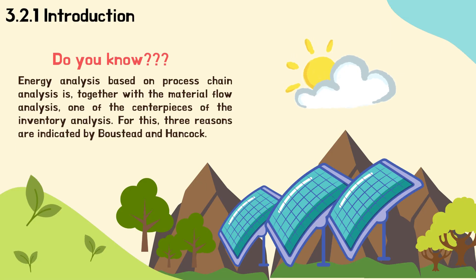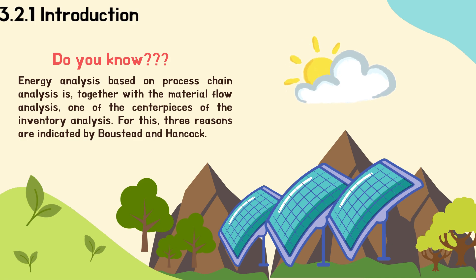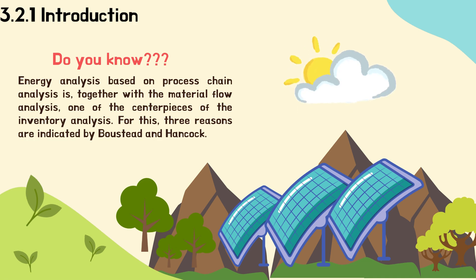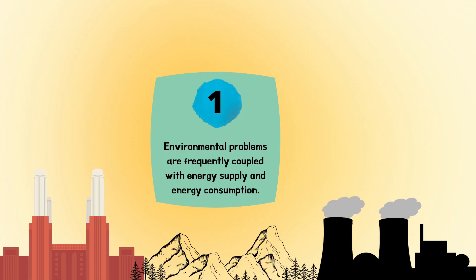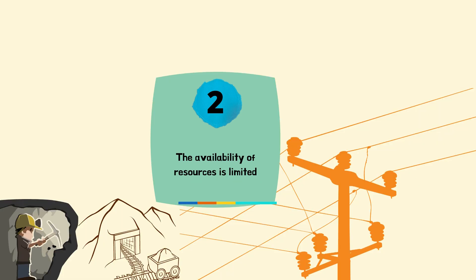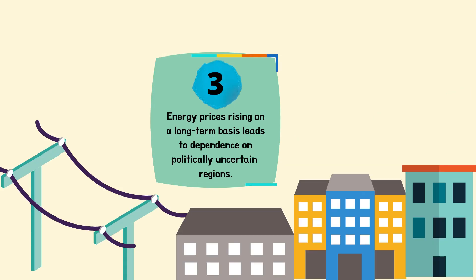Energy analysis based on process analysis is, together with material flow analysis, one of the centerpieces of inventory analysis. Three reasons are indicated by Boastig and Hancock. The first reason is that environmental problems are frequently coupled with energy supply and energy consumption. Secondly, the availability of resources is limited. And lastly, energy prices rising on a long-term basis lead to dependence on politically uncertain regions.